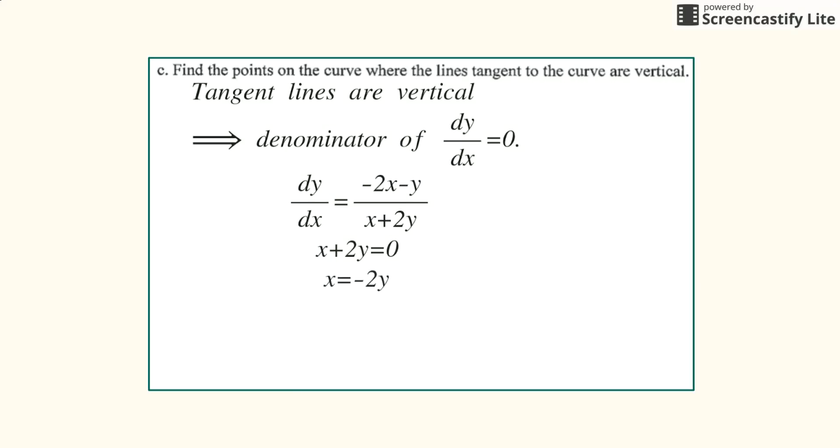Solve for x, and then plug in negative 2y for x in the original equation and then solve for y. So you multiply all the values, combine like terms of y squared.